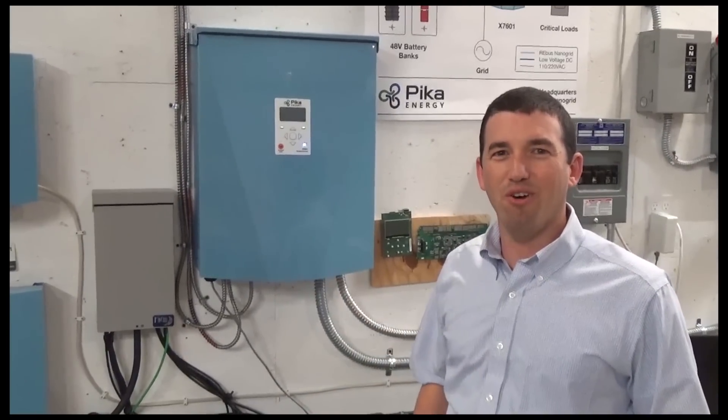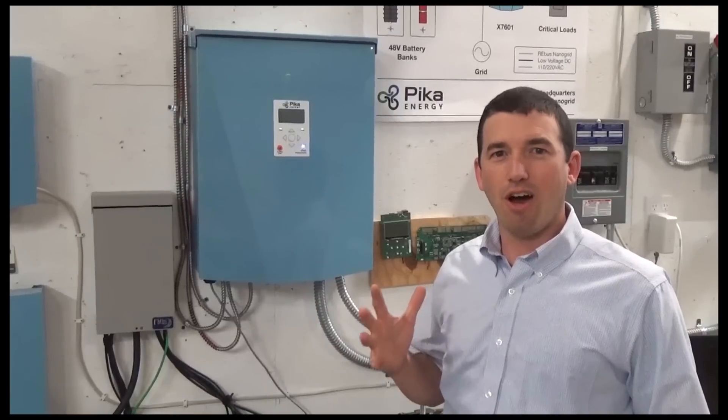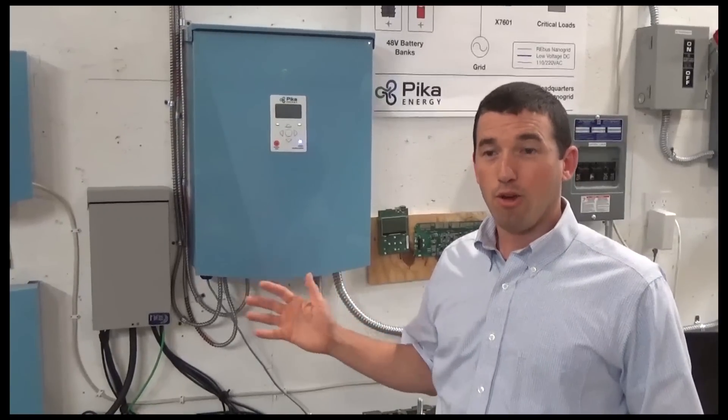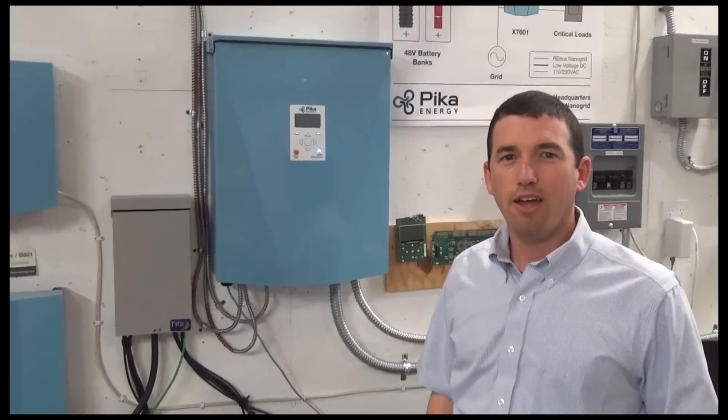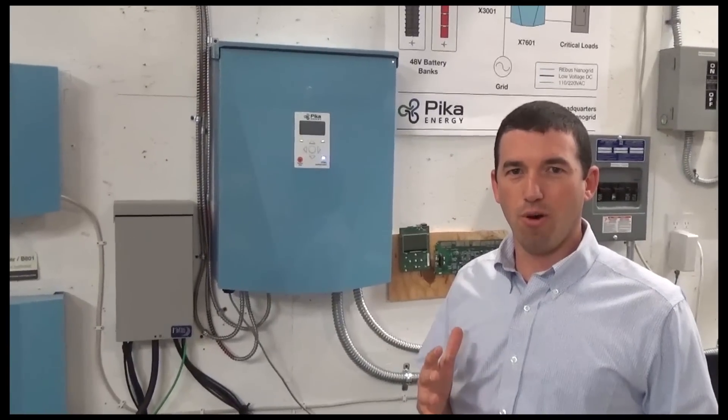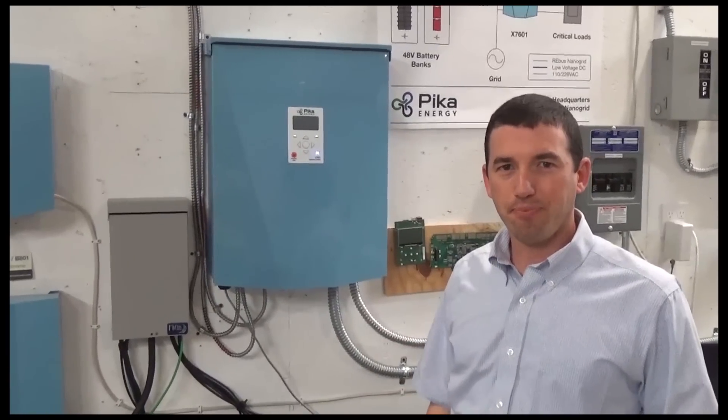This inverter will support a full 7.6 kilowatts of basically off-grid loads. If you lose the grid, your batteries will support up to the full 7.6 kilowatts of loads on your home until the grid comes back up. Amazing.